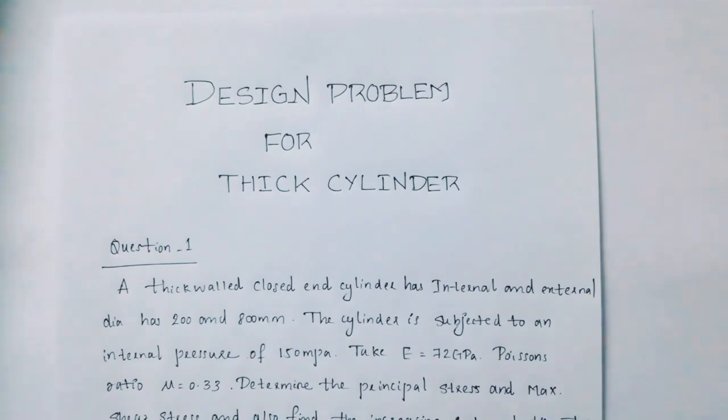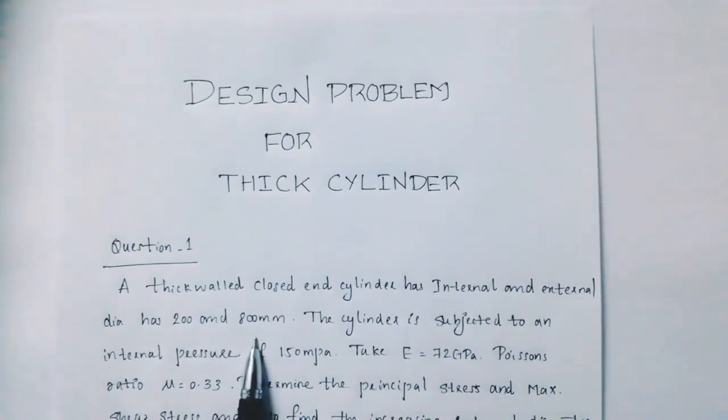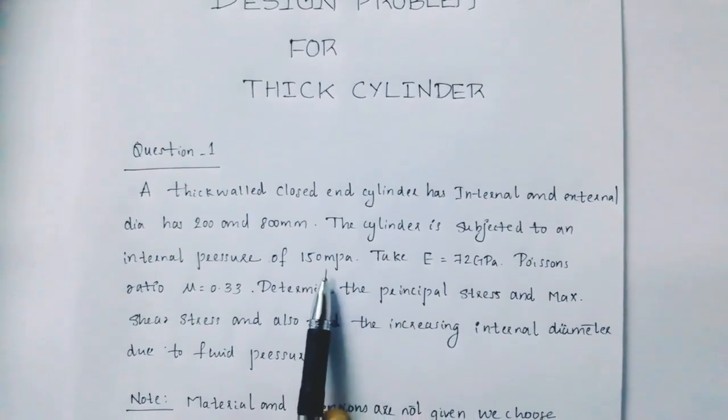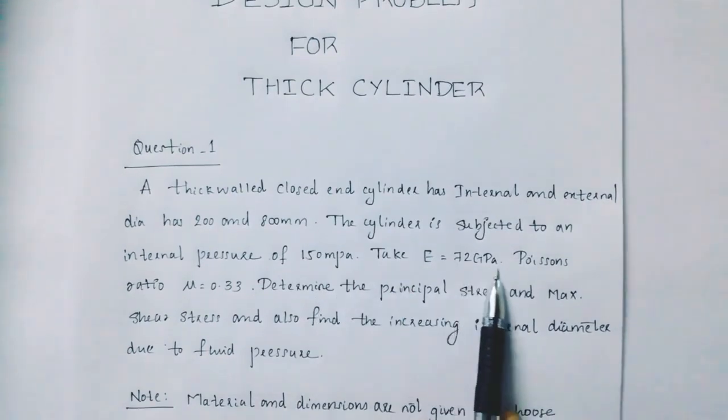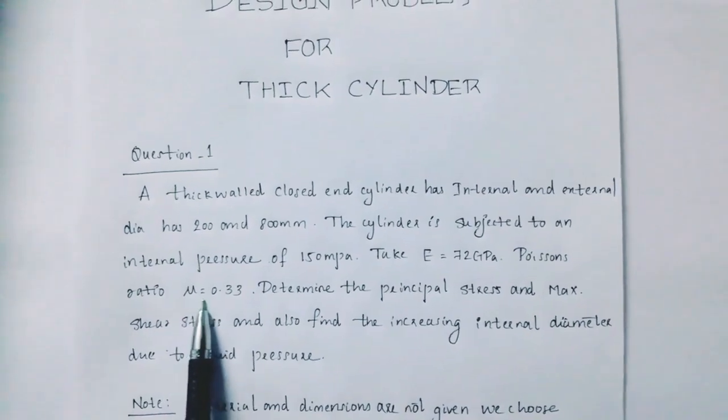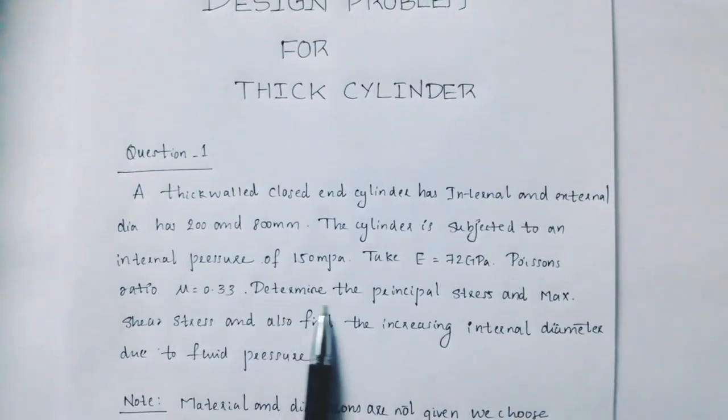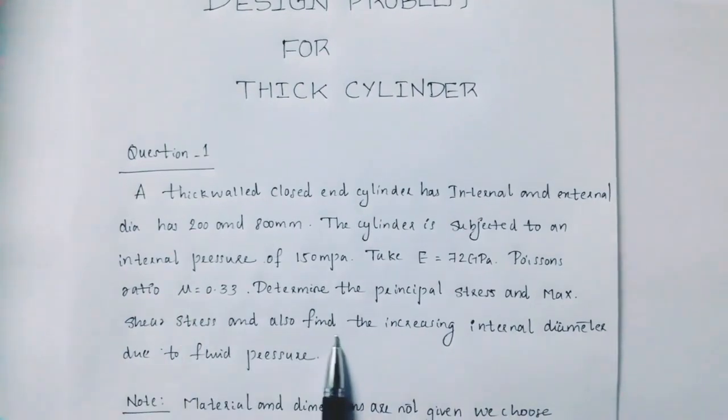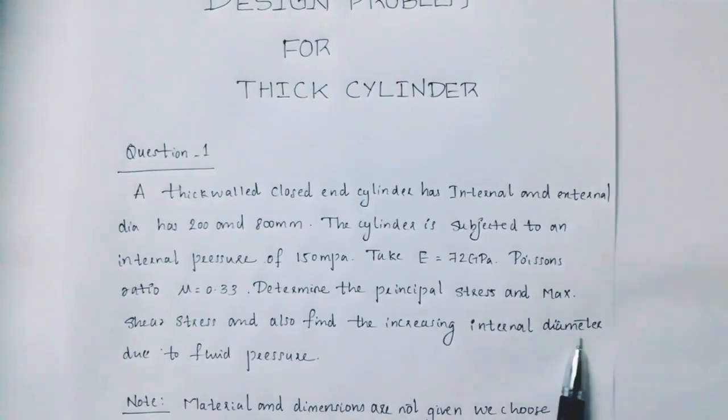A thick walled closed end cylinder has internal and external diameters of 200 and 800 mm. The cylinder is subjected to an internal pressure of 150 MPa. Take E equal to 72 GPa, Poisson's ratio nu equal to 0.33. Determine the principal stress and maximum shear stress and also find the increasing internal diameter due to fluid pressure.